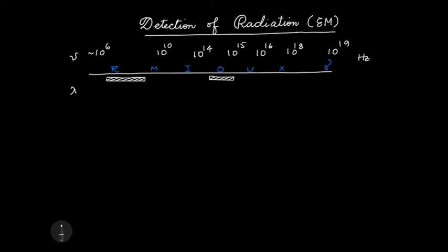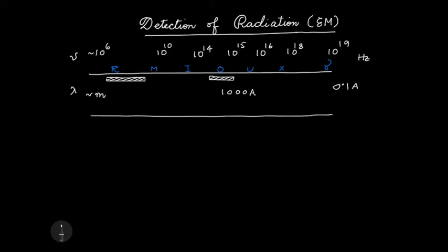Just to give you an idea of the wavelengths involved: gamma rays correspond to about 0.1 angstrom, optical is around 5,000–8,000 angstroms, and radio waves can reach up to a few meters. So it is a completely different range — spanning an order of 10^10 or even more.